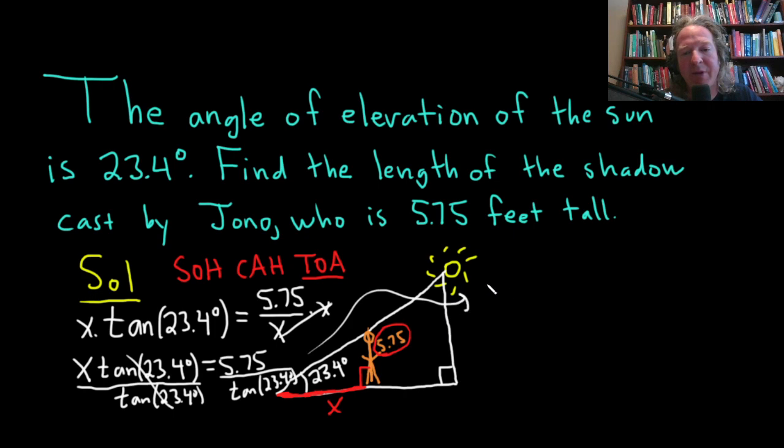I'm going to write it again over here. X is equal to 5.75 divided by the tangent of 23.4 degrees. I'm going to put this in my calculator.